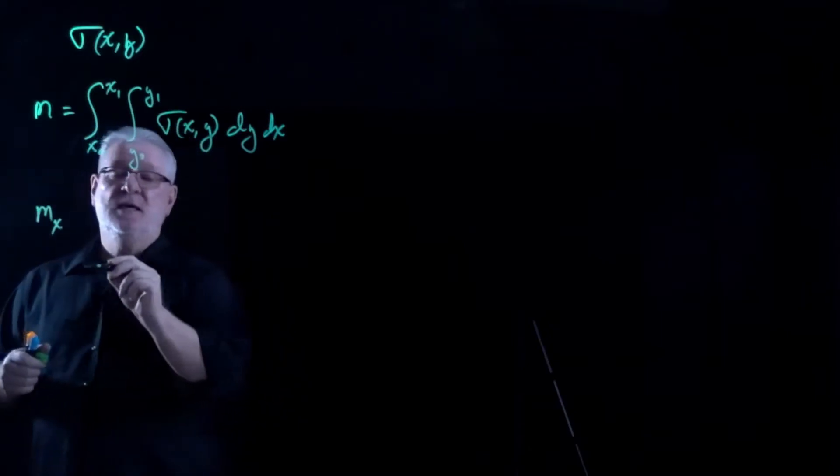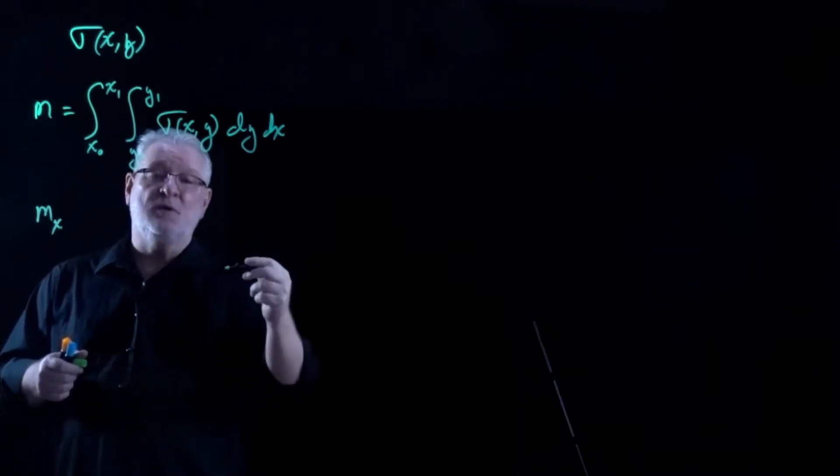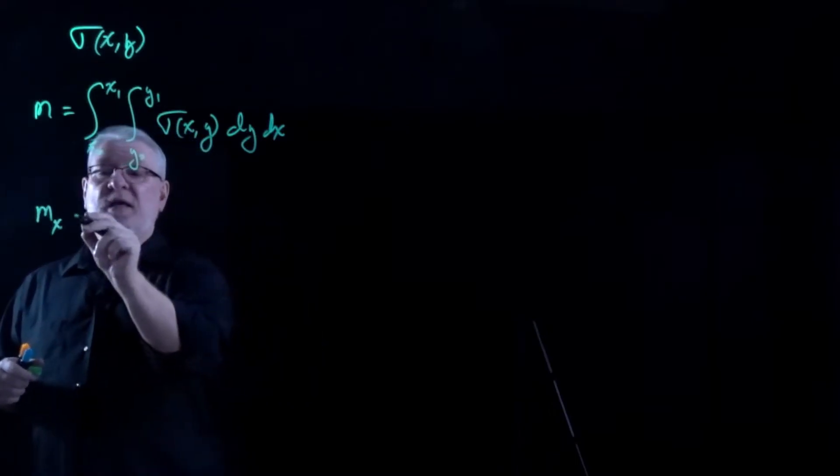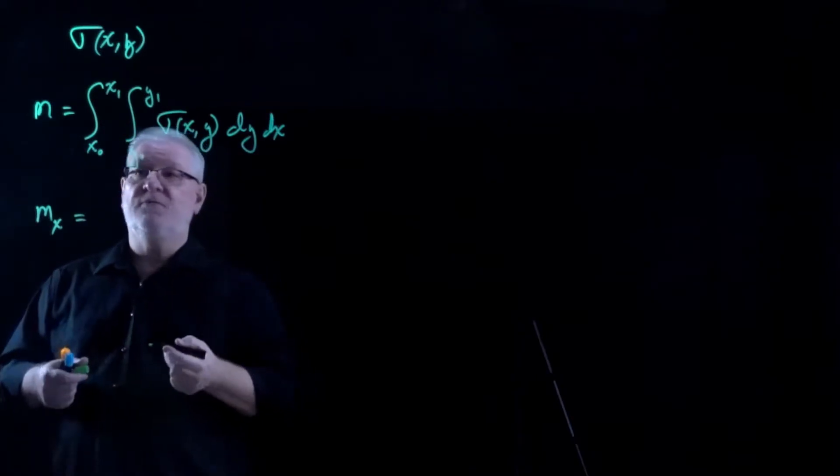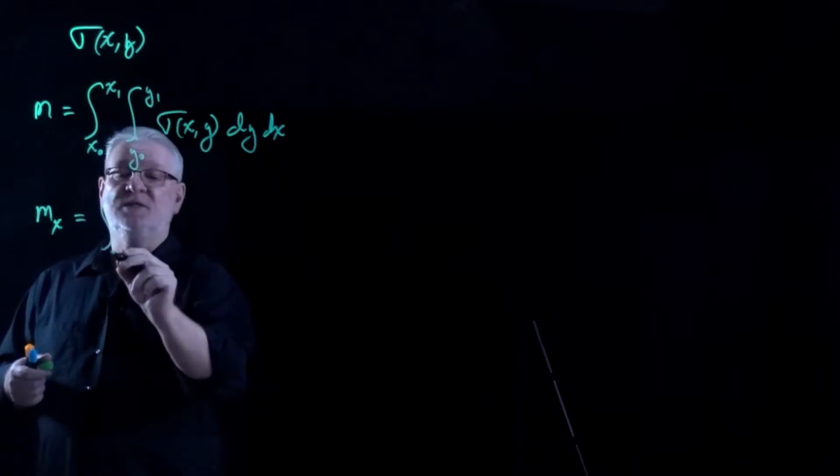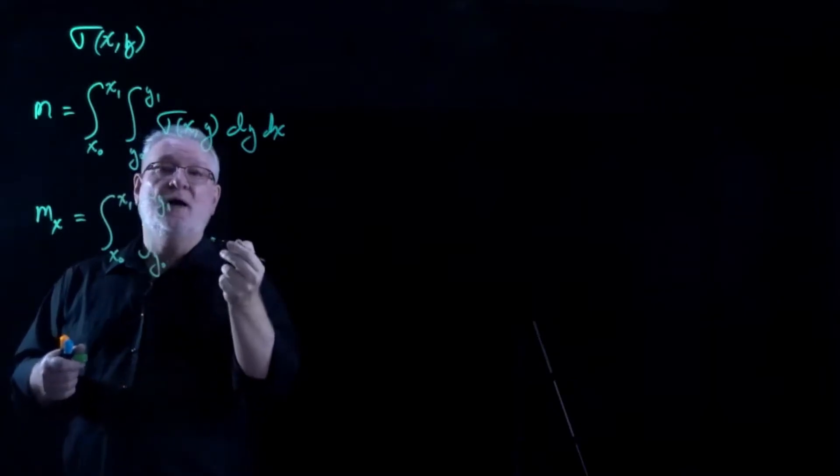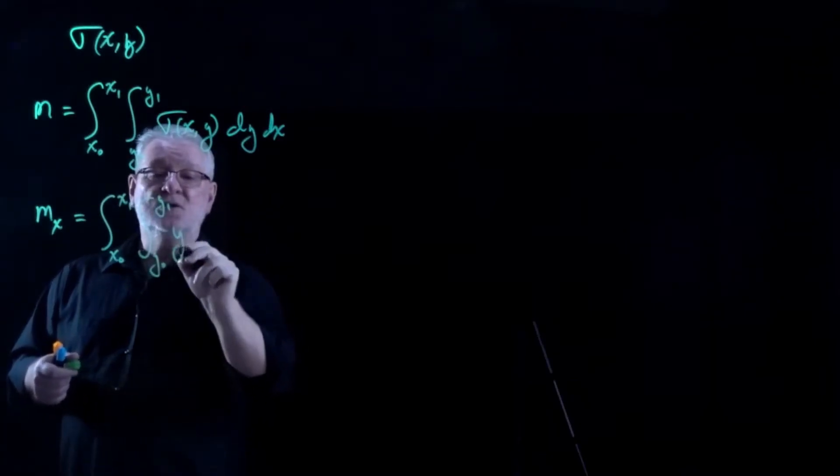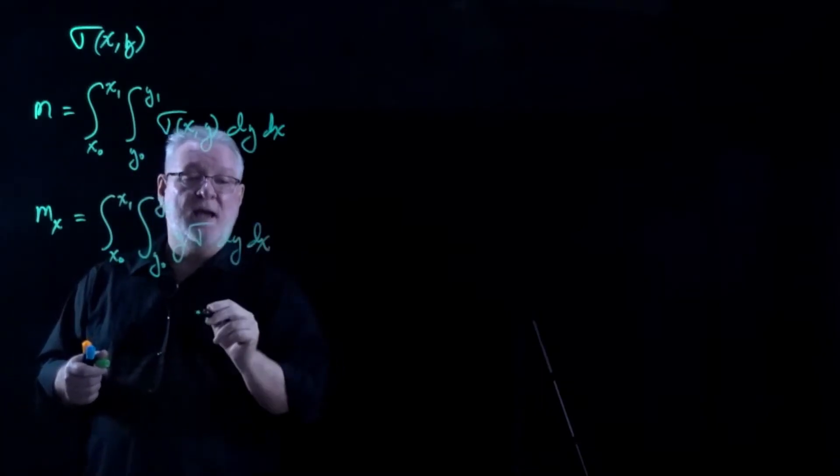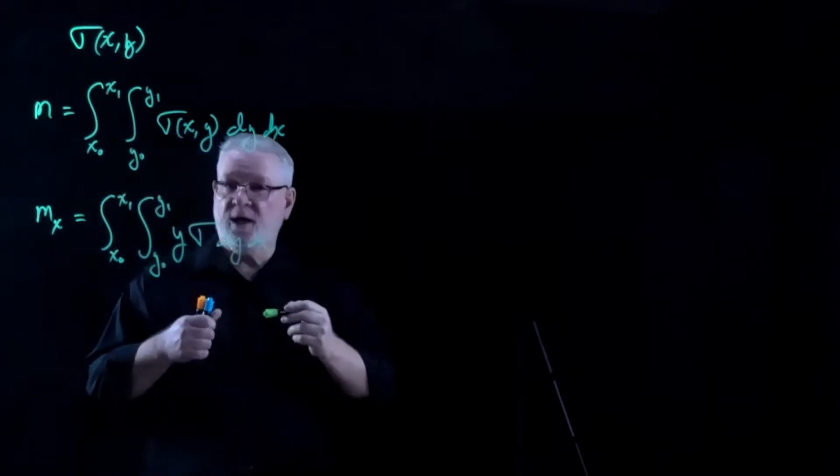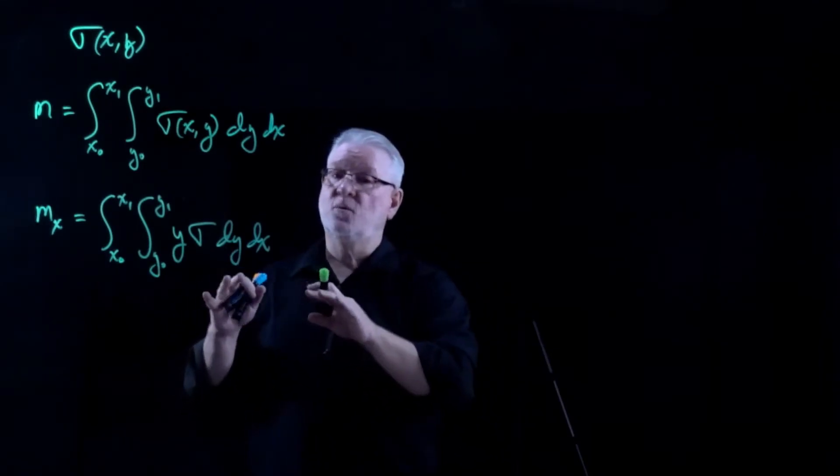So first, MX. Again, this would be the moment where we want the moment around the X axis. So we'd be integrating in the Y direction. That means we're going to need an extra Y in our integral in order to take into account the vertical distribution of the mass. So it'll still be the same limits of integration, X naught to X1, Y naught to Y1, and we'll still be integrating the density. It'll just now be Y times the density function, dy dx.